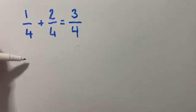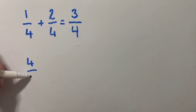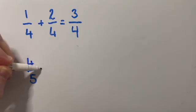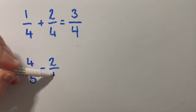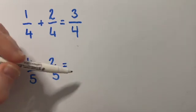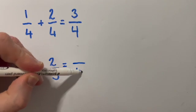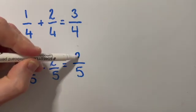The same would happen with subtraction. So if I've got four over five and I'm going to take away two over five or two fifths. Because the bottom number or the denominator is the same, it's going to be the same in the answer. And then I just do four take away two, which is two.